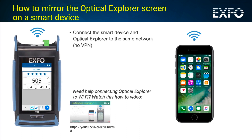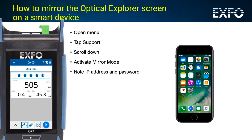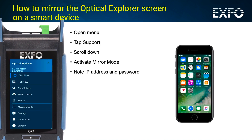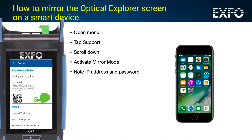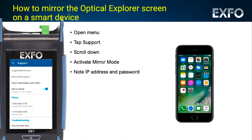On your Optical Explorer, open the menu from the upper left corner. Tap Support, scroll down, and activate Mirror Mode. Then note the OX1's IP address and password.